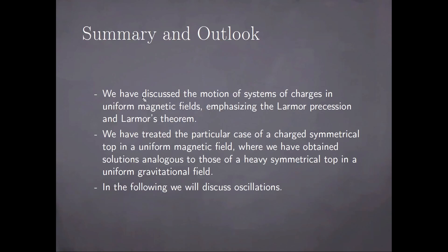In summary, we have discussed the motion of systems of charges in uniform magnetic fields, emphasizing the Larmor precession and Larmor's theorem. We have treated the particular case of a charged symmetrical top in a uniform magnetic field, where we have obtained solutions analogous to those of a heavy symmetrical top in a uniform gravitational field. This concludes our discussion of rigid body motion, which has extended over the last two chapters. In the next chapter, we are going to discuss another class of important problems in classical mechanics related to the phenomenon of oscillations.